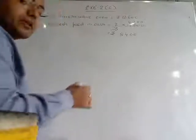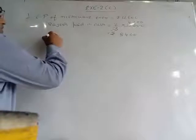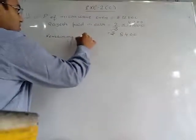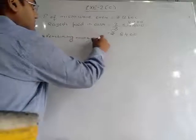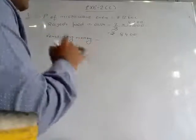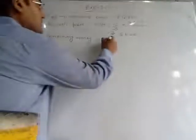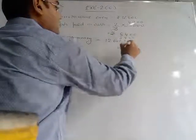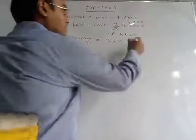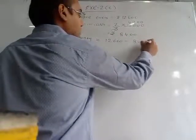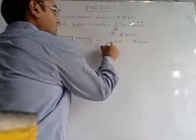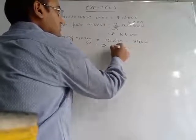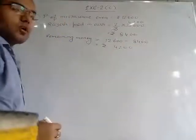Now we will find the remaining money. What is the remaining money after giving cash? The total cost of the microwave is 12,600. Out of that 12,600 we will subtract 8,400. On subtracting we get 4,200 rupees.